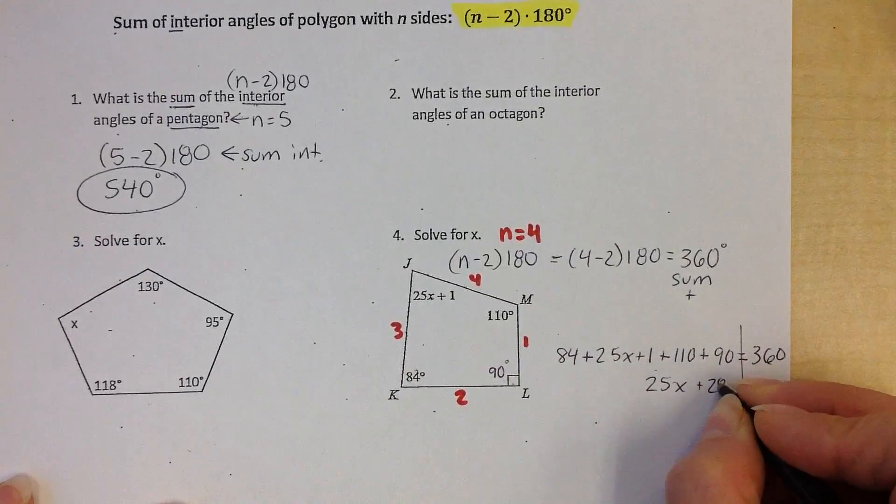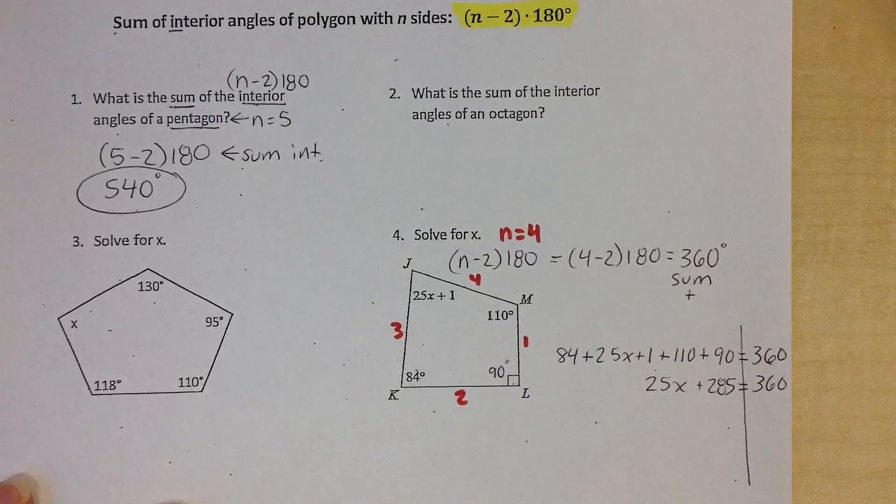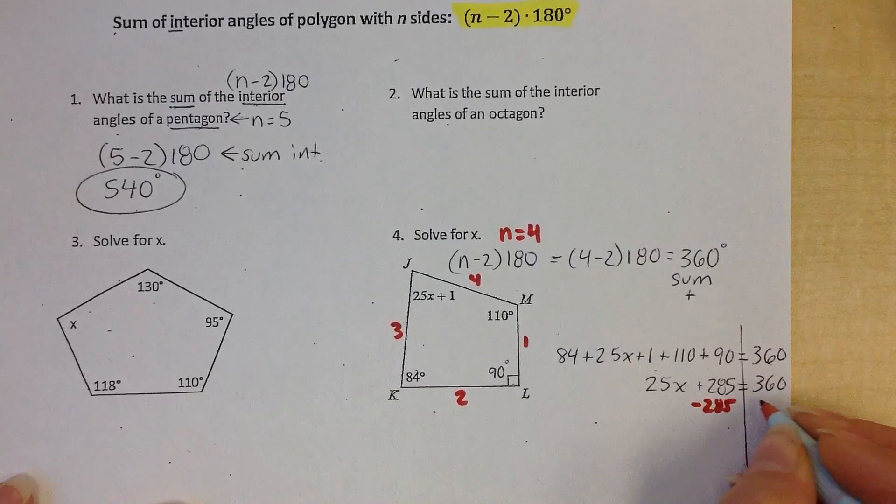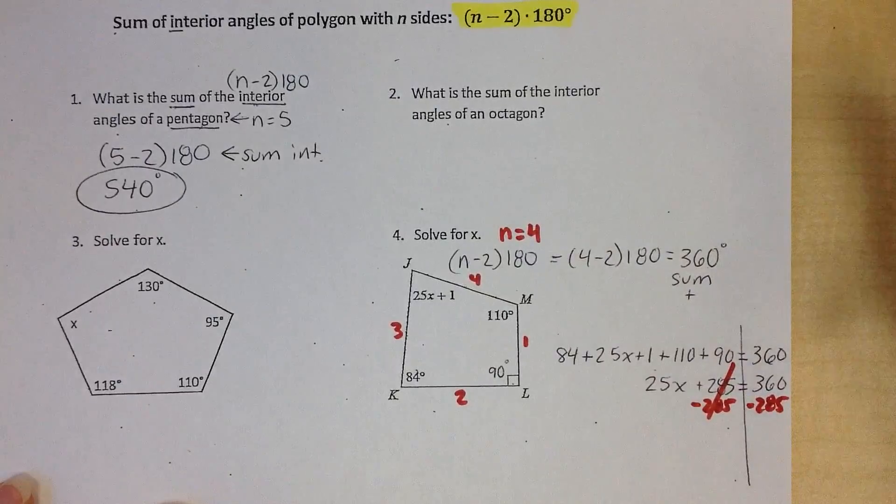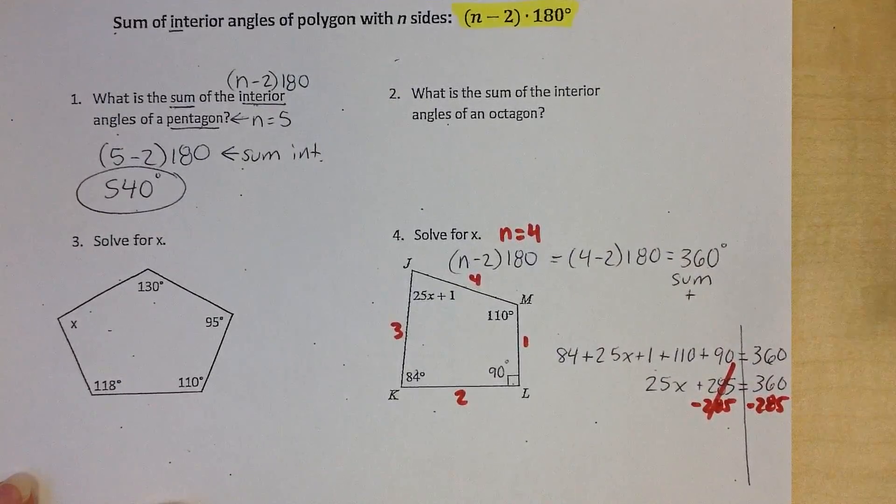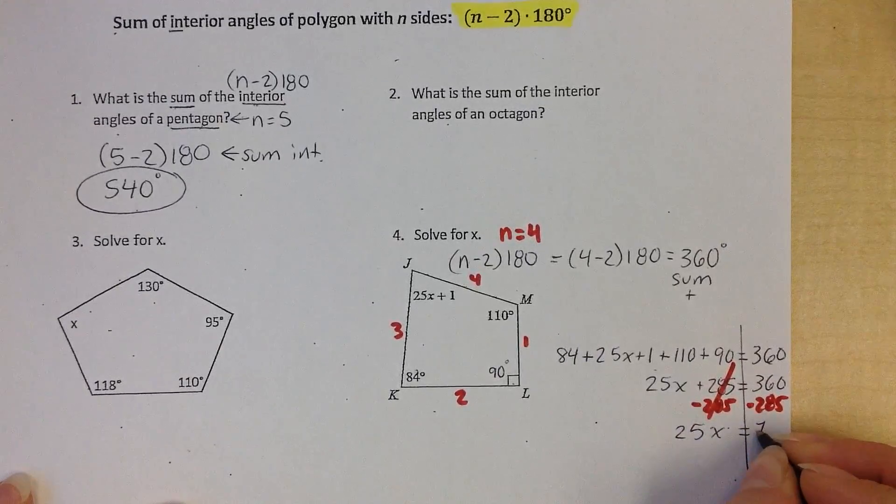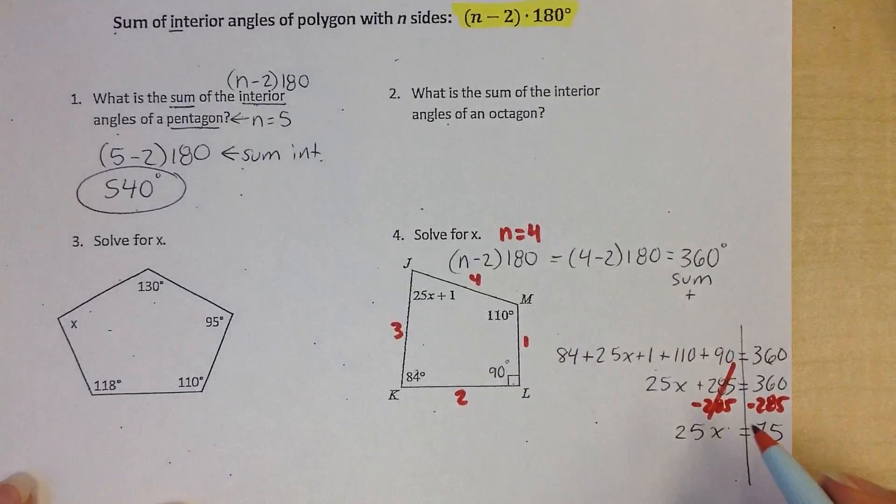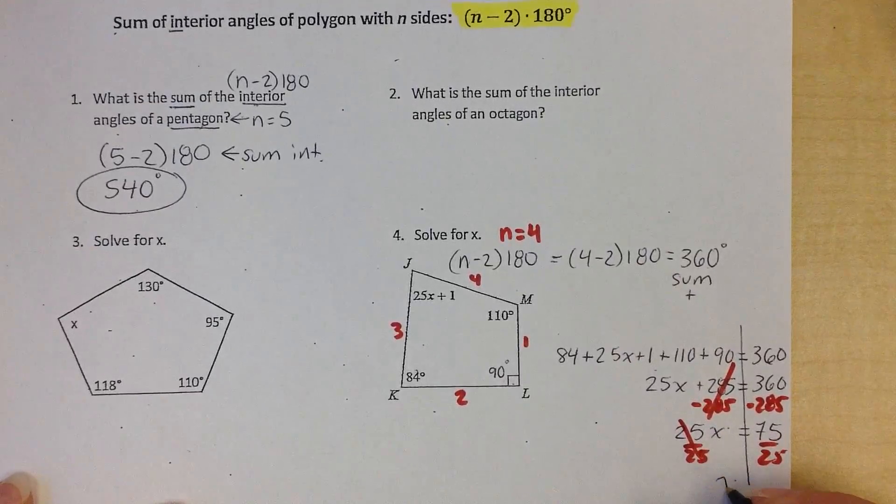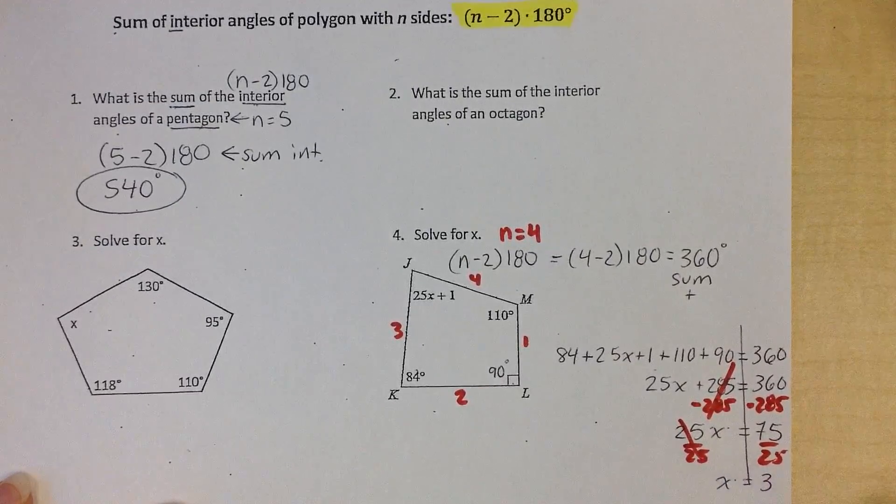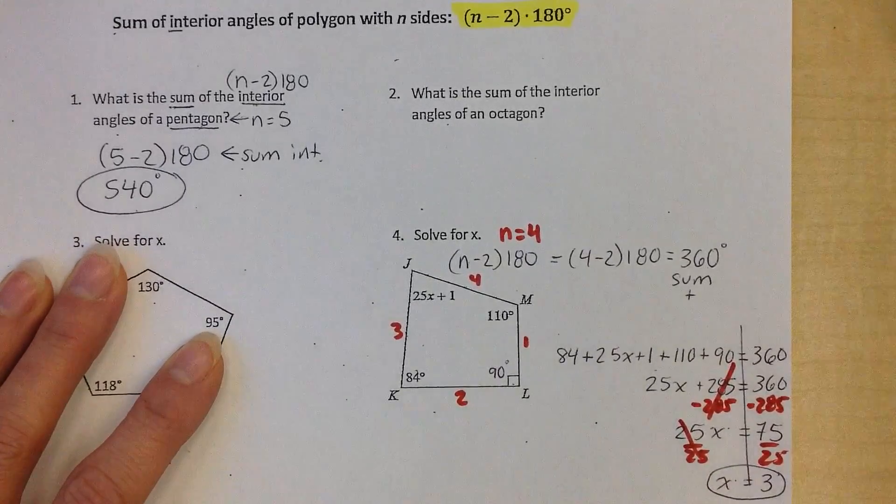And now I'm going to subtract 285 from both sides. So 360 minus 285, 25x equals 75, and the opposite of multiplication is division. Okay, now that is what they're asking for. I mean, technically I'm done, but as always, it makes me happy when you check.